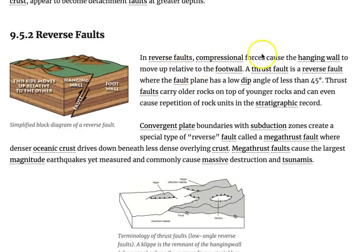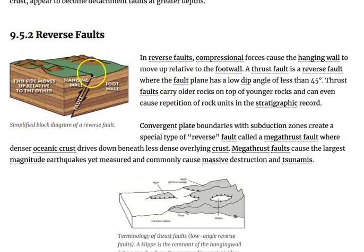In reverse faults, compressional forces cause the hanging wall to move up relative to the foot wall. A thrust fault is a reverse fault where the fault plane has a low dip angle of less than 45 degrees. Looking at the reverse fault on this block diagram illustration, we can see the hanging wall has slid upward along the fault plane.